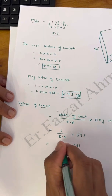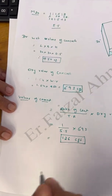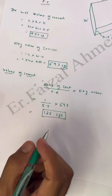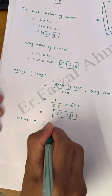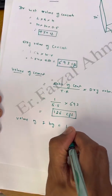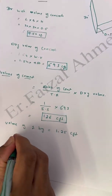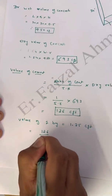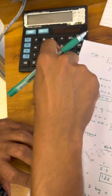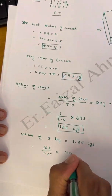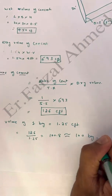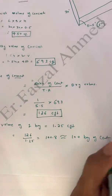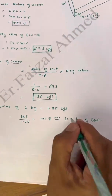We got 126 cft of cement. To convert into bags, the volume of one bag equals 1.25 cft. So 126 ÷ 1.25 = 100.8, which we take as 100 bags of cement required for this measured slab.